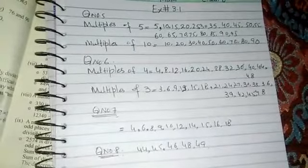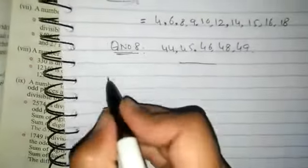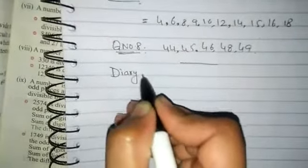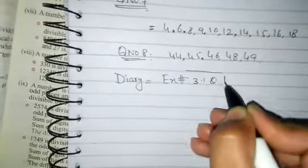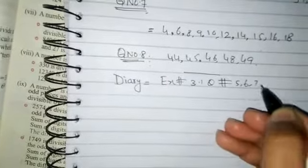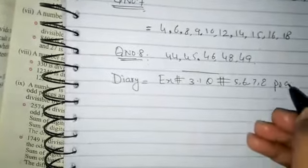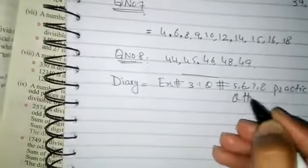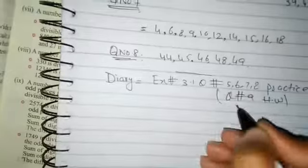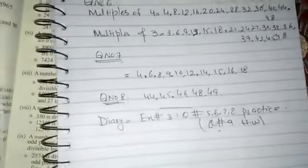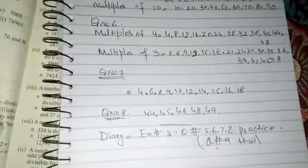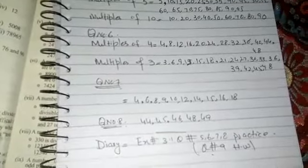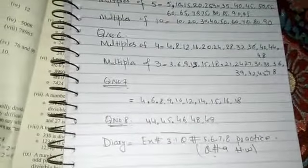We have completed 4 questions. Your diary for today: Exercise 3.1, question numbers 5, 6, 7, 8 - you need to practice these. And question number 9 is your homework. In question number 9, write all prime numbers less than 15. You can do it easily. Thank you, students.